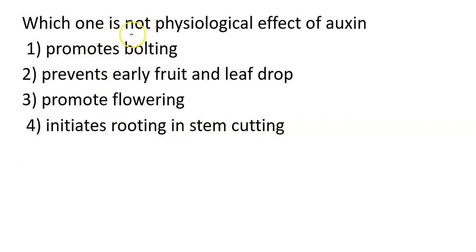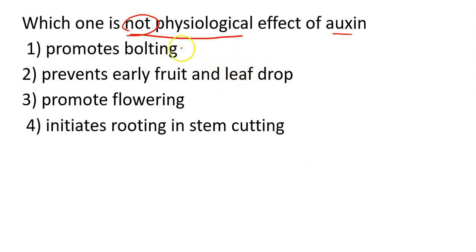Next question: which one is NOT a physiological effect of auxin? We need to identify the option that does not belong to auxin. The four options are: Option 1 — promote bolting; Option 2 — prevent early fruit and leaf drop; Option 3 — promote flowering; Option 4 — initiate rooting in stem cuttings.